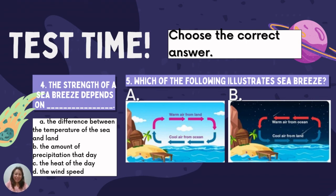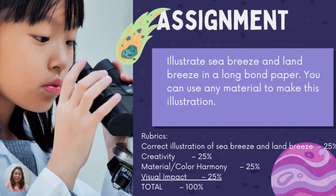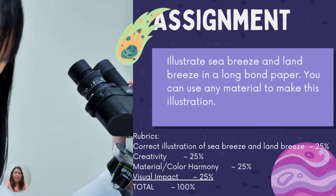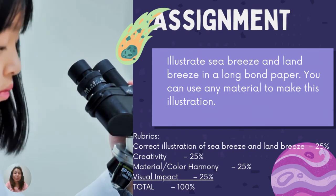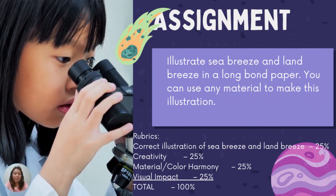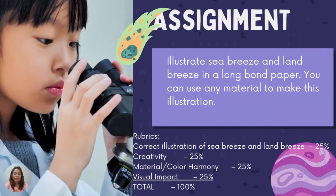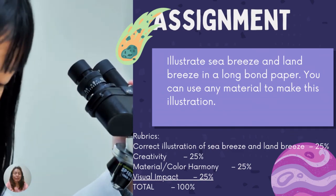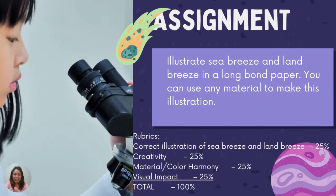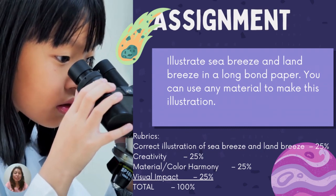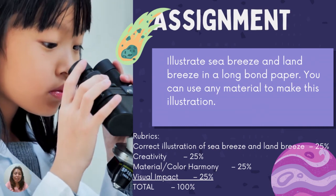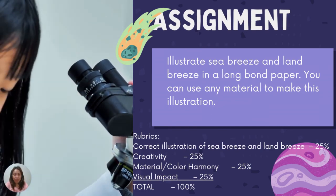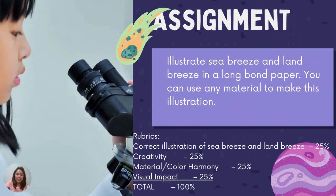Did you get it perfectly? I hope so. So this will be your assignment: illustrate sea breeze and land breeze on a long bond paper. You can use any material to make this illustration. The rubrics are: correct illustration of sea breeze and land breeze — 25%; creativity — 25%; material or color harmony — 25%; and visual impact — 25%, for a total of 100%. Use your imagination and creativity to illustrate sea breeze and land breeze.